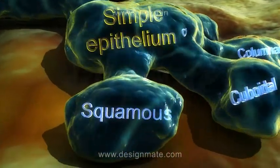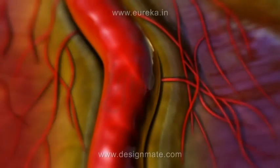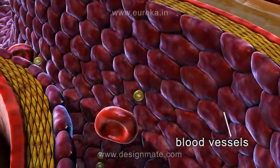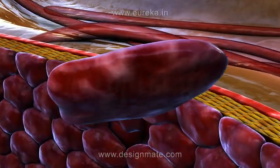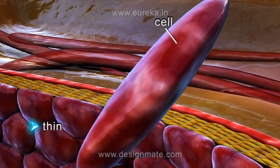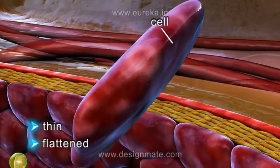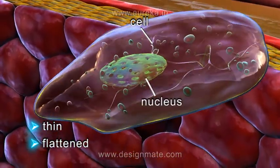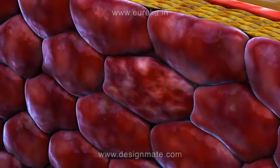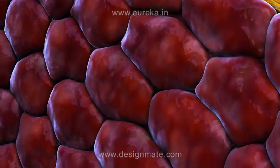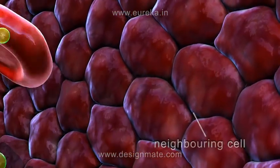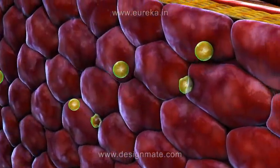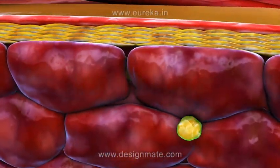Squamous epithelium forms the inner lining of the blood vessels. The cells are thin, flattened, and contain little cytoplasm enclosing a centrally placed disc-shaped nucleus. The margins of the cells are irregular and fit closely into those of the neighbouring cells. It helps in diffusion of materials across the membrane.